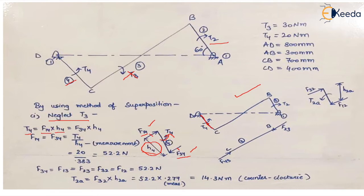By measurement we get the value of H4, which comes out to be somewhere about 0.383. Keep in mind that whenever we draw any diagram to scale, while putting values in the formula we have to convert back into the original quantities. T4 is already given, we have calculated H4 by measurement, and this gives us the value of force F14 and F34.